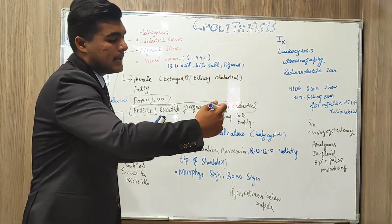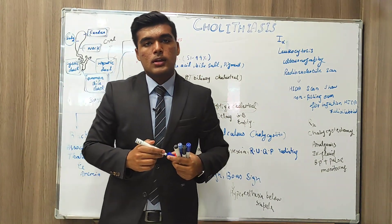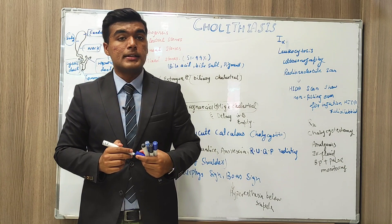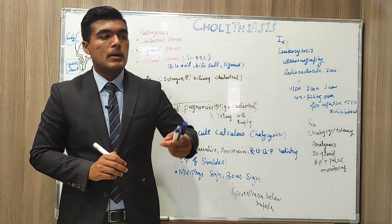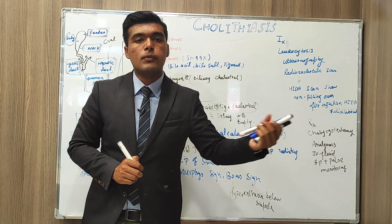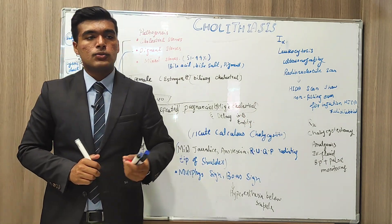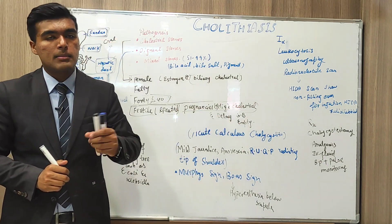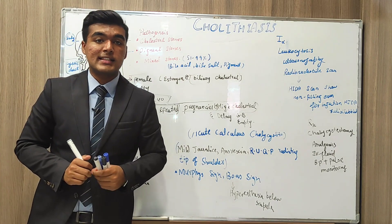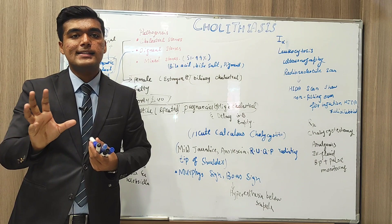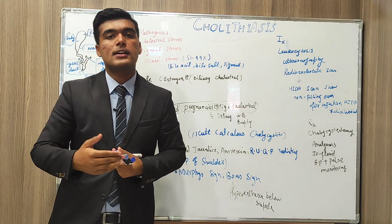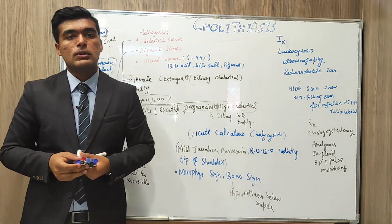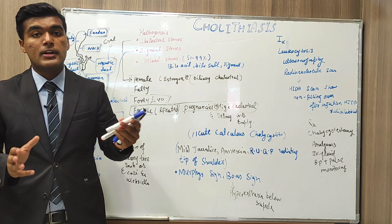Moving from anatomy to physiology: the gallbladder's main role is to store bile. The secretion of bile occurs in the liver, from where it travels to the gallbladder and is stored there. The main role of bile is in digestion — it helps by emulsifying fat.